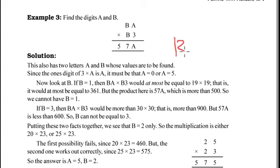Now let us take B is equal to 3. BA times B3 would be more than 30 times 30. Replacing B is equal to 3, let other number be anything. Even if it takes the smallest number 0, 30 times 30 is equal to 900, which clearly is greater than 57 some number. 900 is greater than this. So we are discarding the possibility 3 here. B is equal to 3. Okay fine.